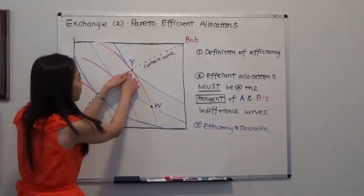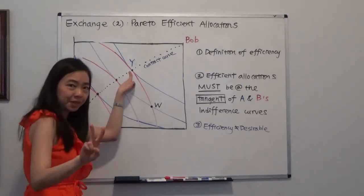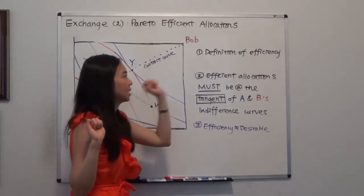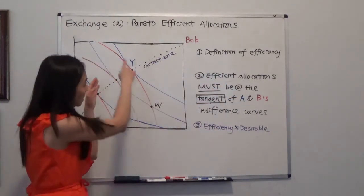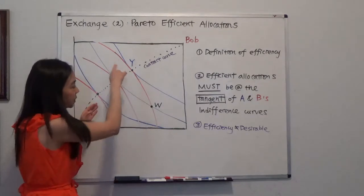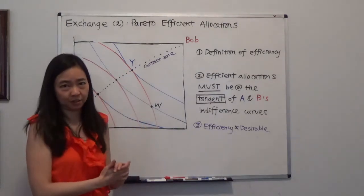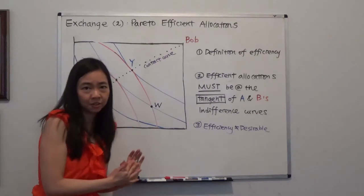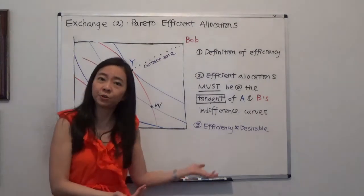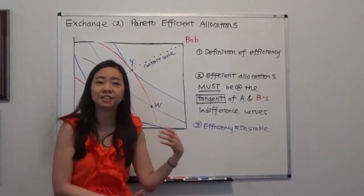So once you move to point Y, the second point I want you to remember is this. For efficient allocations, the indifference curve of two people must be tangent to each other. If the indifference curves are not tangent to each other, then you know the allocation of good one and good two is inefficient.